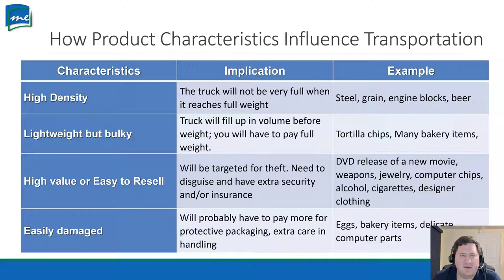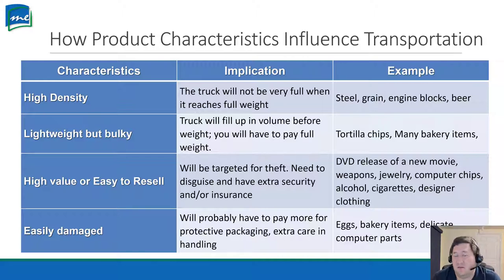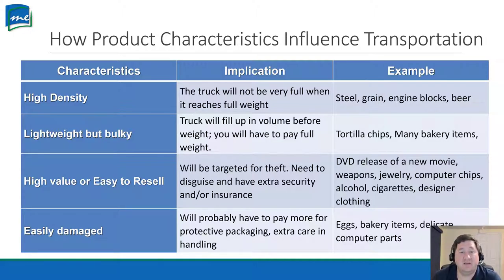Our final category is easily damaged. You'll probably have to pay more for packing because we want to make sure it's packed right, so that even if the truck hits potholes or speed bumps, our product won't be damaged. There's a lot of extra care in that handling. Examples include eggs, bakery items, or delicate computer parts — all things that could be easily damaged.